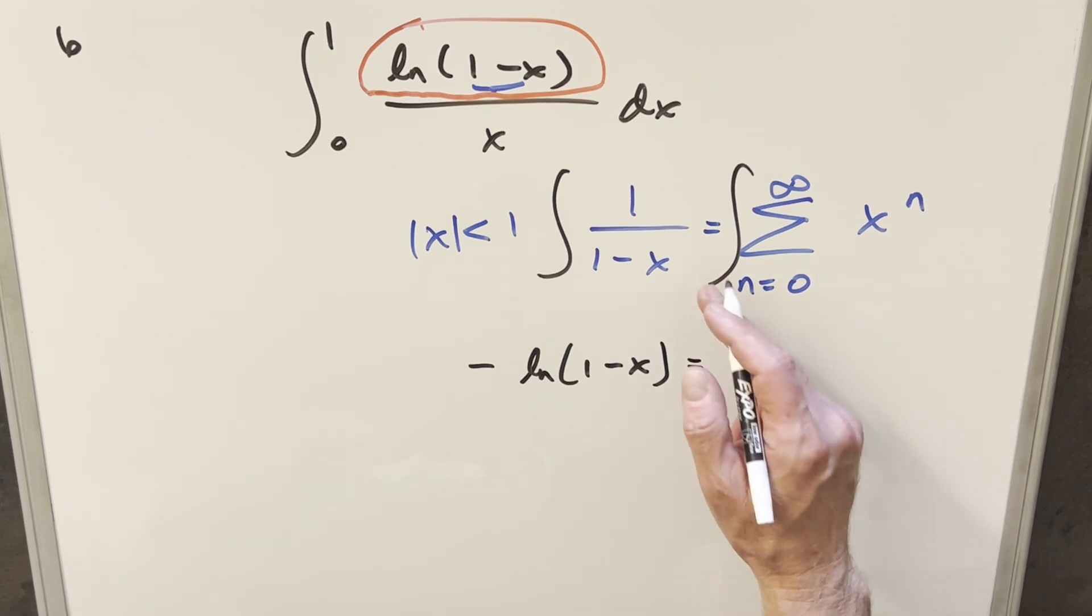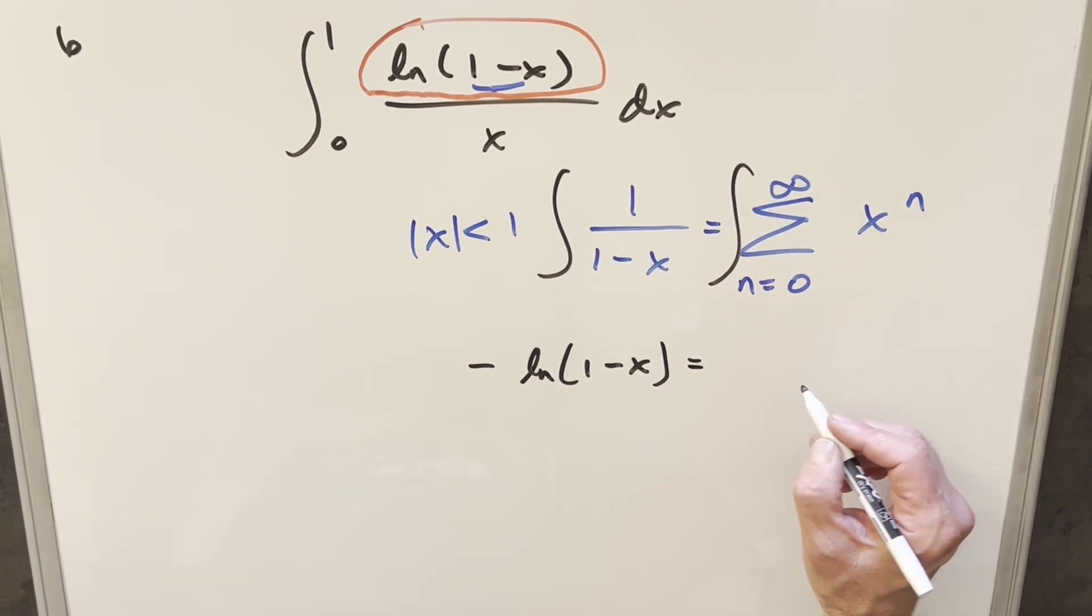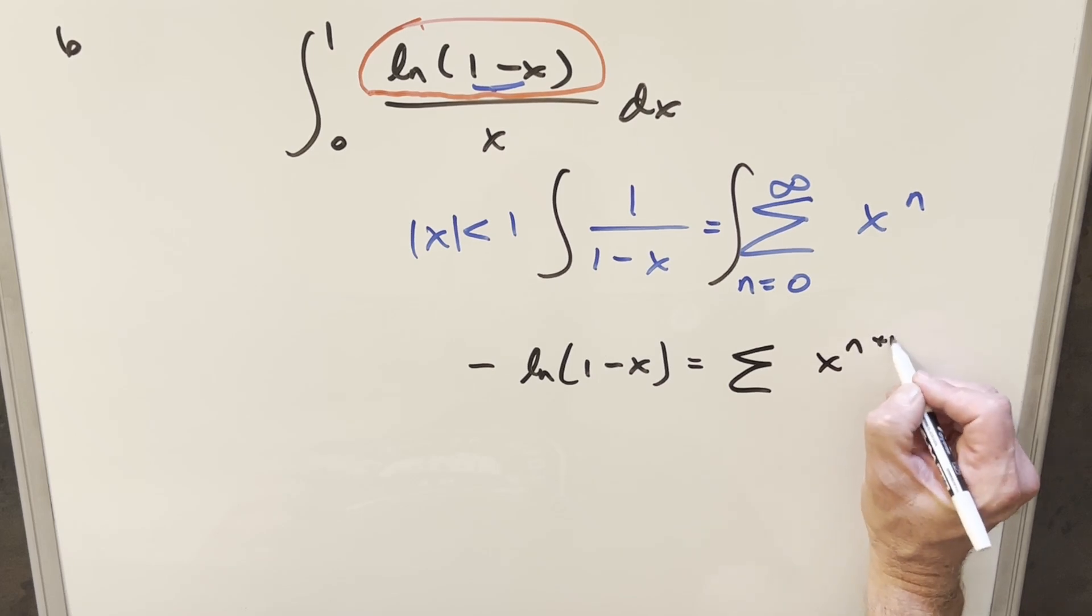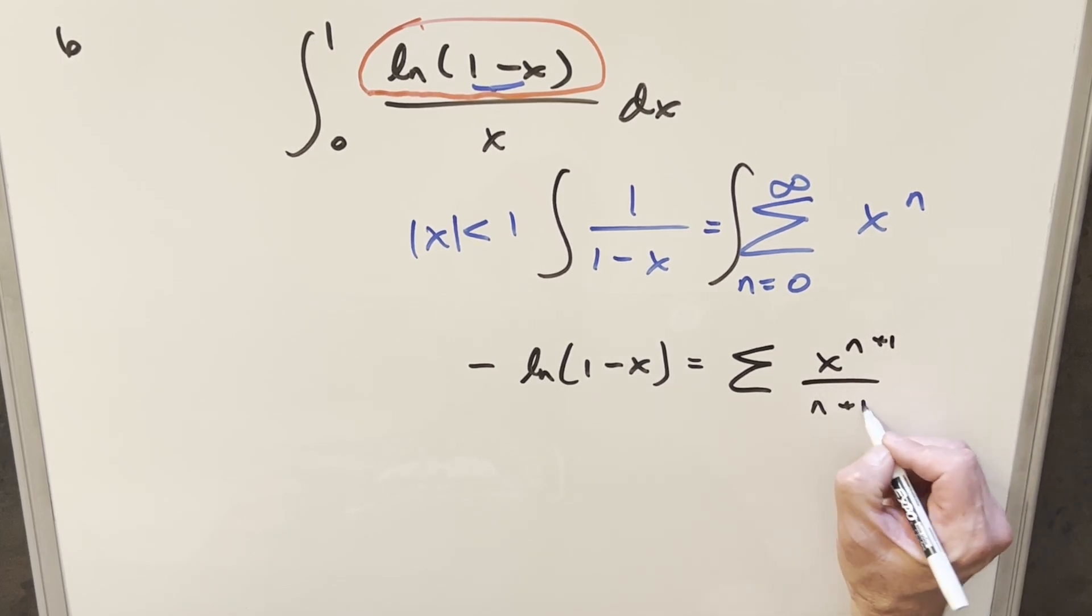And then doing this over here, when we integrate this with power rule, we're still going to have this summation. And then this is just going to become x to the n plus one over n plus one.